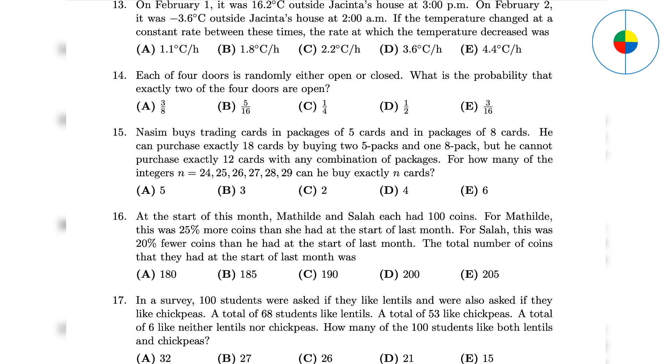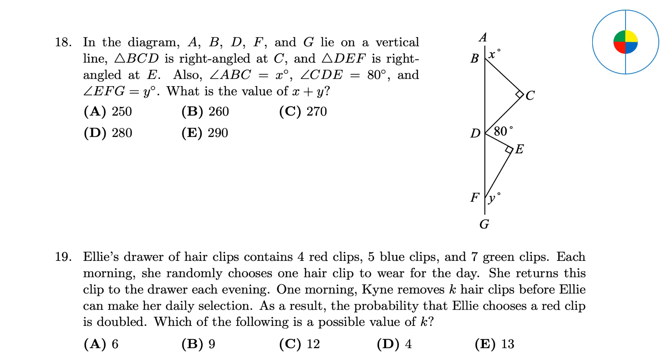Question 17 - Use Venn diagram. You will see the answer is 68 plus 53 plus 6 minus 100, which is 27. Question 18 - X plus Y equals angle C plus angle BDC plus angle E plus angle FDE, which is 90 plus 90 plus 180 minus 80. The answer is 280.